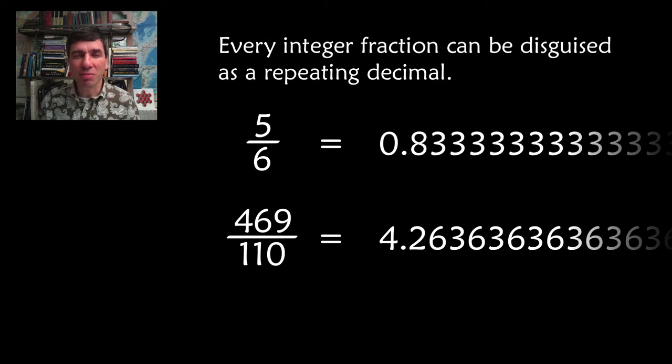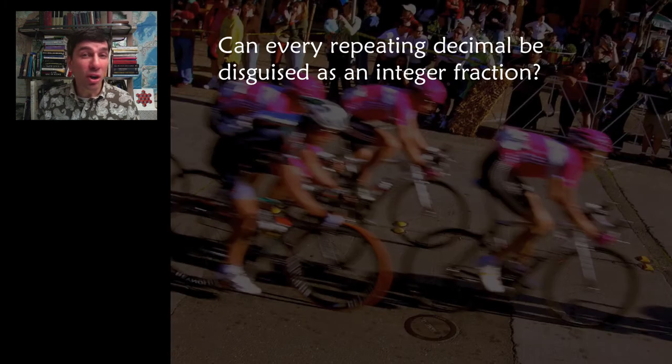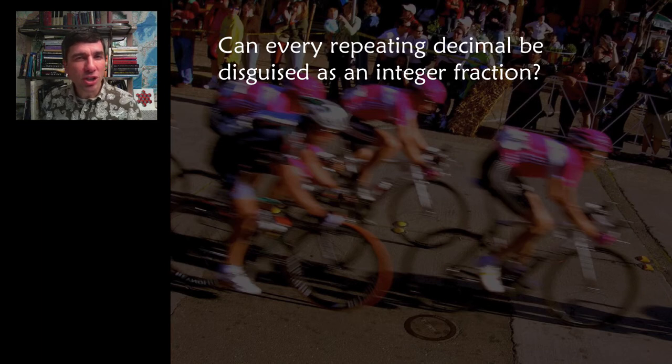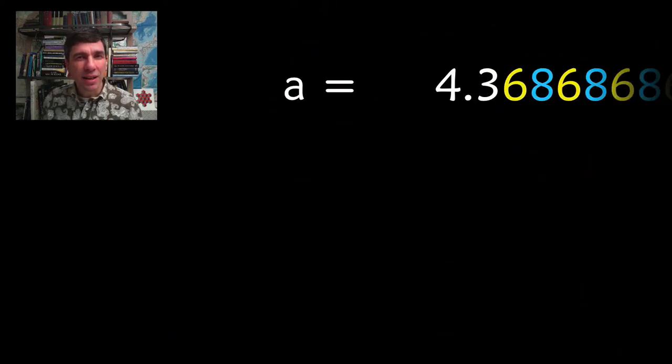Every integer fraction can be disguised as a repeating decimal. You should all be wondering if the opposite is true. Can every repeating decimal be disguised as an integer fraction? We're going to choose a particularly nasty looking repeating decimal, 4.368. How on earth are we going to turn that into an integer fraction?